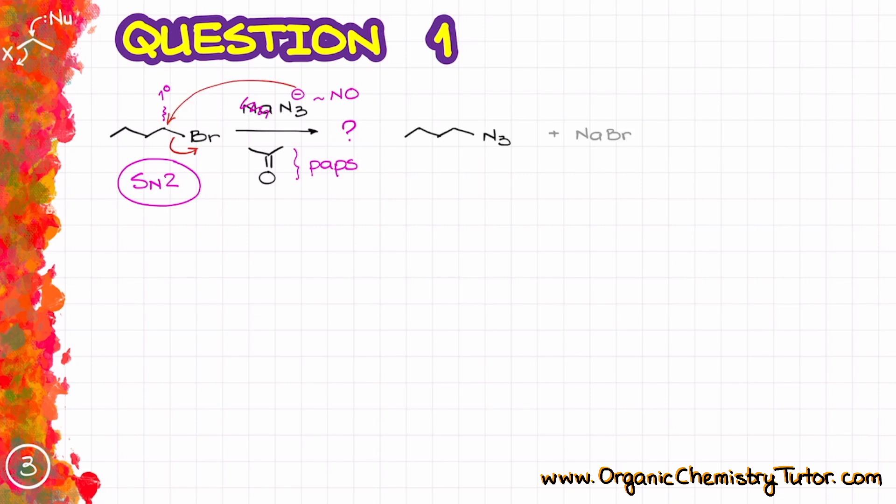Mechanistically speaking SN2 reaction is a very simple reaction where the nucleophile comes in and displaces our leaving group in one movement. So as a result we're going to get the final molecule over here and some co-products which we don't really care about.